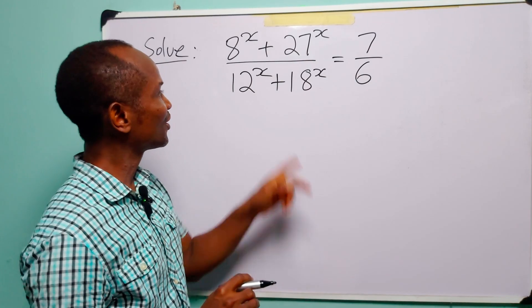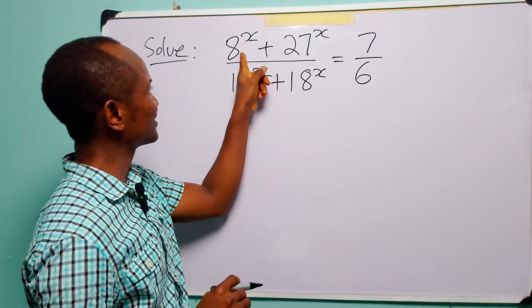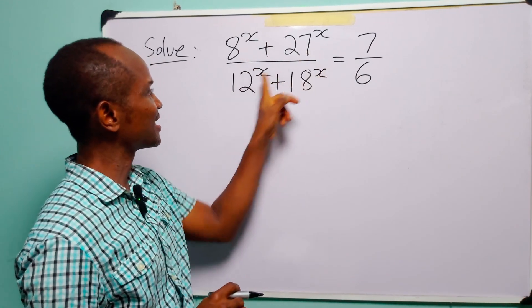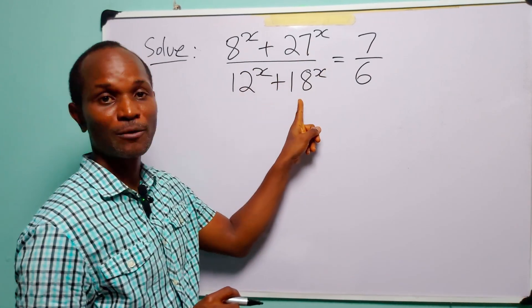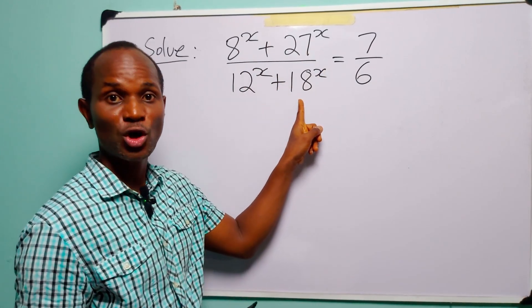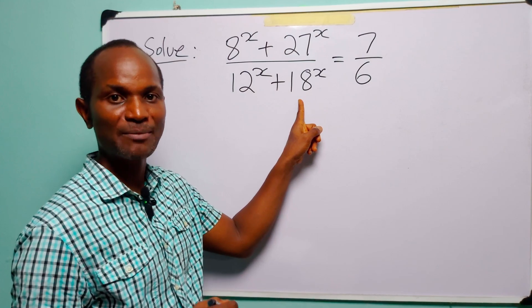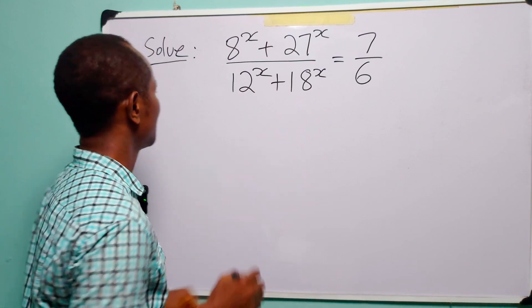Hello and welcome. To solve this equation, let us express these four numbers as products of their prime factors.